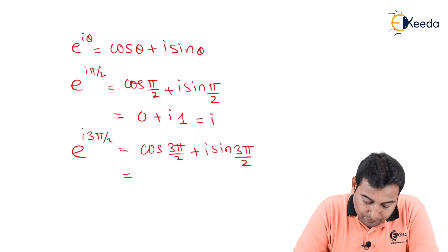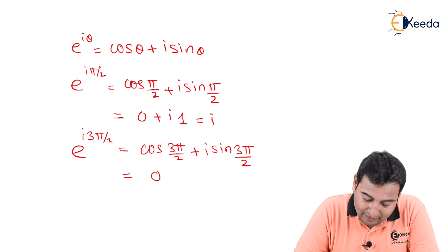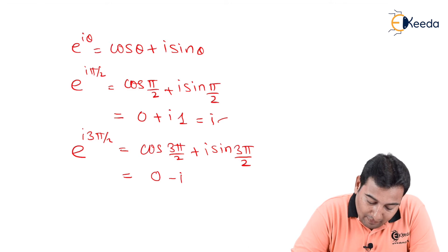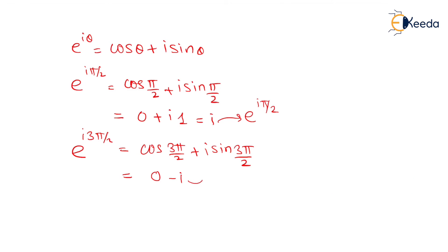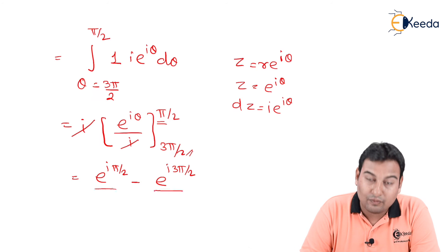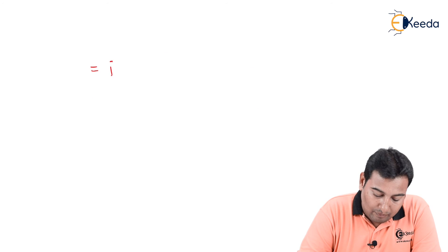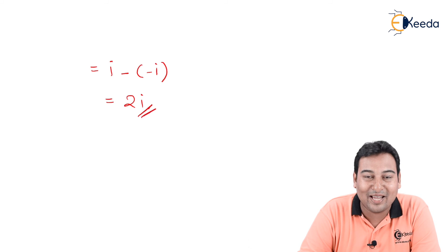cos(3π/2) = 0 and sin(3π/2) = -1, so e^(i·3π/2) = -i. Therefore the result is i minus (-i) = 2i. That's it — thank you.